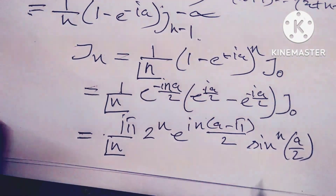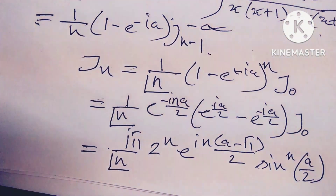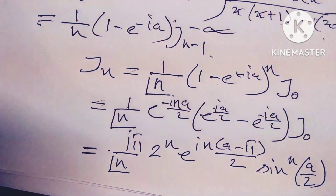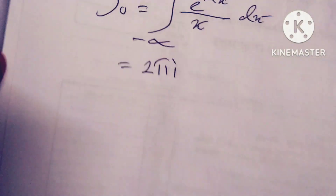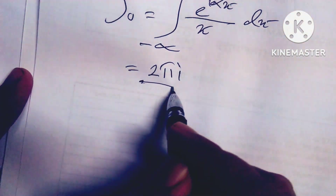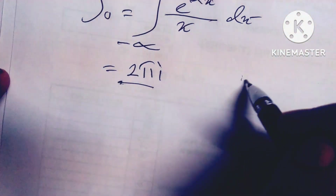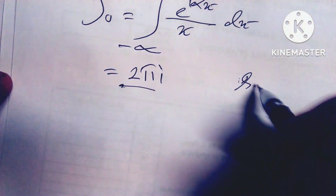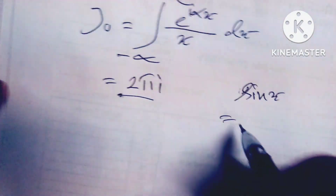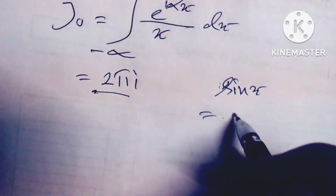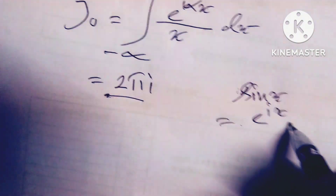So friends, this is my answer. Now I want to note that J0 equals 2·pi·i, and sin(x) equals e^(ix) times e^(-ia/2). Thanks for watching.